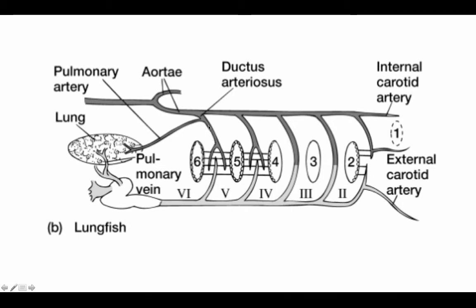The sixth arch in lungfish has gained a branch that leads to the lung — this is the pulmonary artery bringing blood from the heart to the lungs. But there's still a connection between the pulmonary artery and the dorsal aorta; this part of the sixth arch lying between them is called the ductus arteriosus. We also see a completely novel vessel here, the pulmonary vein, bringing blood back from the lung into the heart to be re-pumped in this two-circuit system. All of these patterns of flow have to do with the ability to switch between gill breathing and lung breathing.